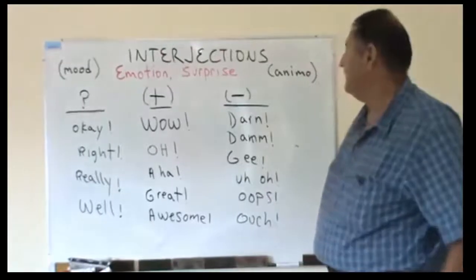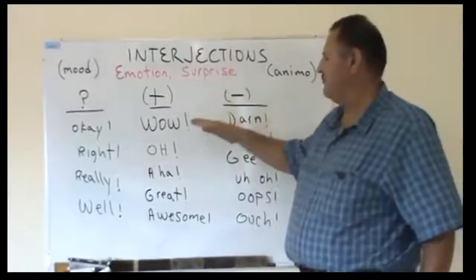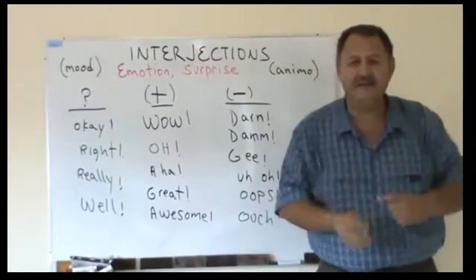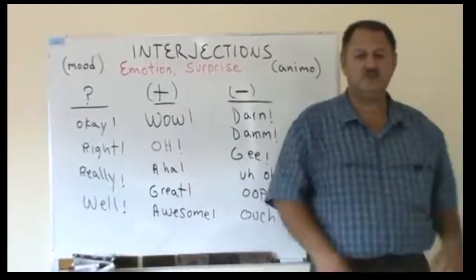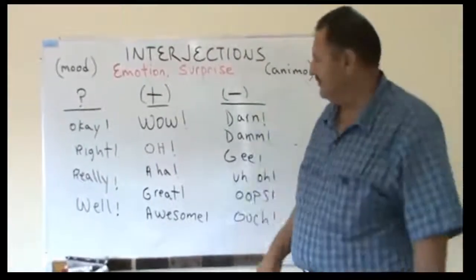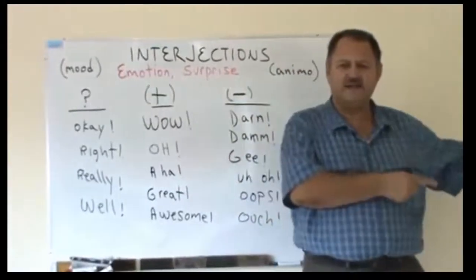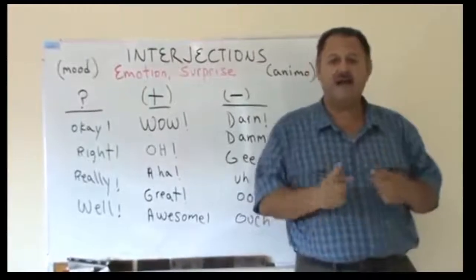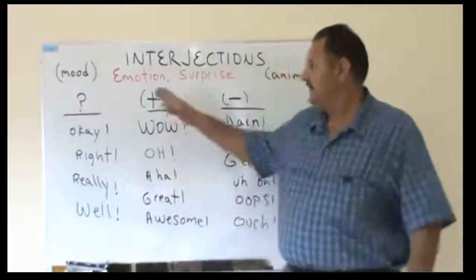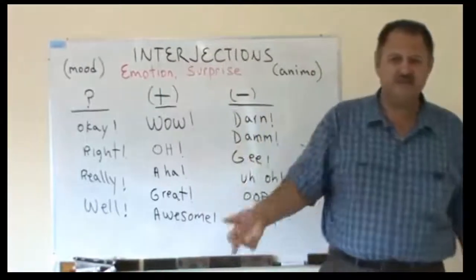So an interjection is a word — it does not change the meaning of the next expression, but it gives the next expression emotion and feeling; it marks the tone of the next expression. Entonces, un interjection es una palabra que no cambia el significado de la siguiente expresión, pero que marca el tono de la siguiente expresión y expresa ánimo, sorpresa, o emoción — ya sean emociones positivas o negativas.